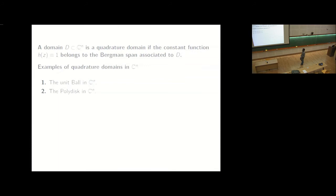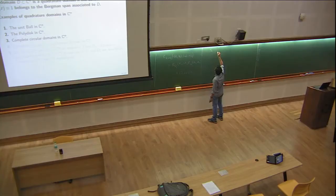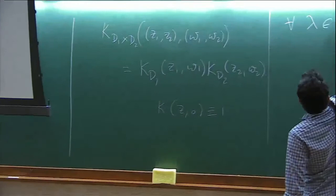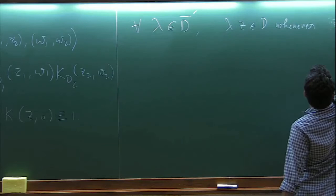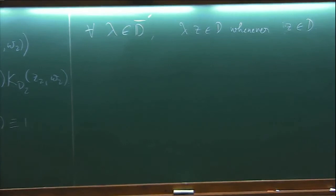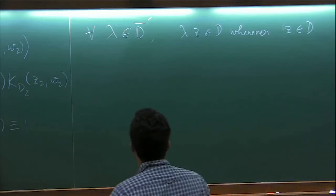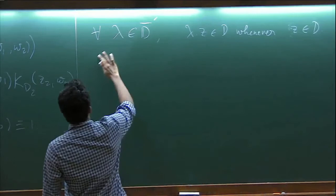Okay, the next one of the examples I would like to concentrate on is complete circular domain. So what does a complete circular domain mean? We have a circle action. So for all lambda in the unit disk, closed unit disk, lambda dot z belongs to d whenever lambda z belongs to d. So the complete circular domains are also examples of quadrature domains here. It's actually a beautiful argument which maybe I would like to run over.